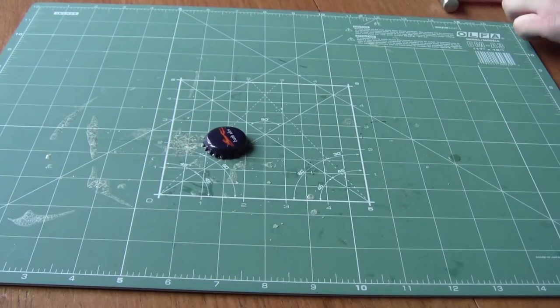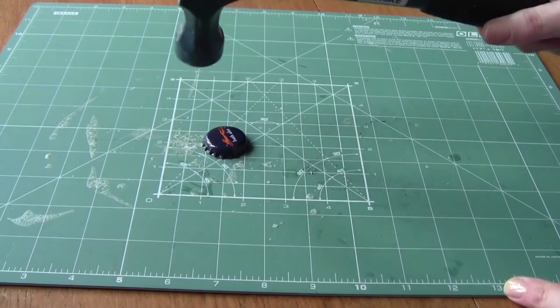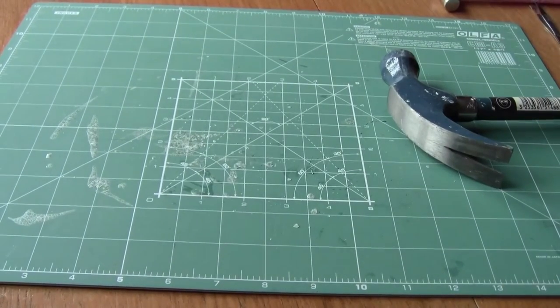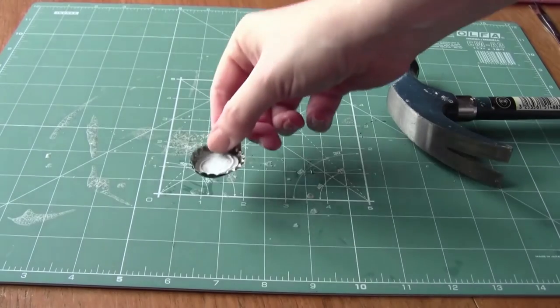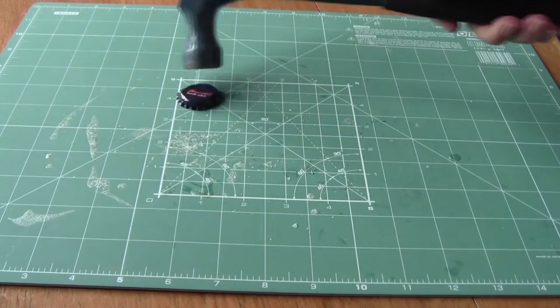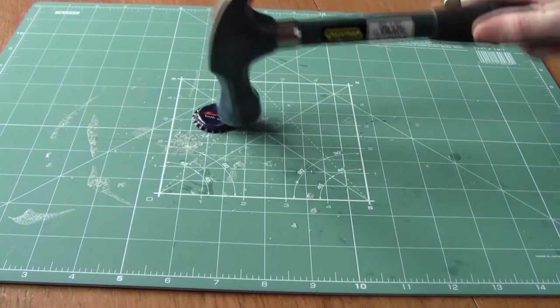Once you've started to do this, turn the cap the right way up and taking a larger hammer start to tap and flatten the bottle cap down. You need the edges to be flayed outwards before you use the larger hammer or they start to turn under and you won't get the nice star effect that you want.